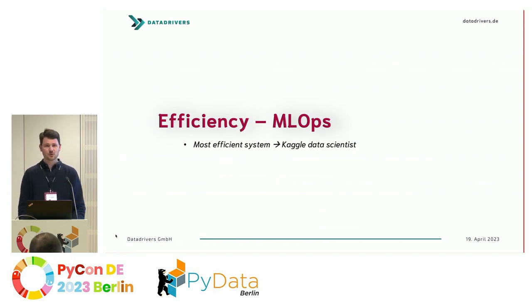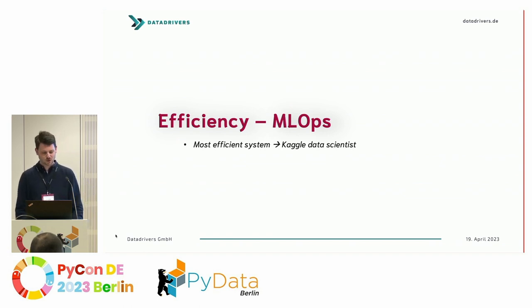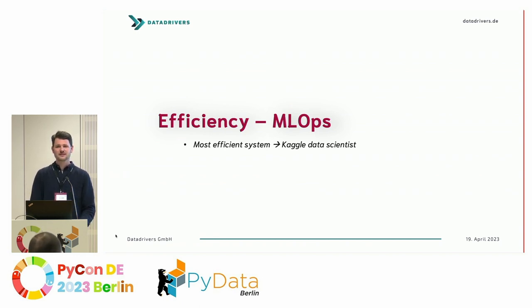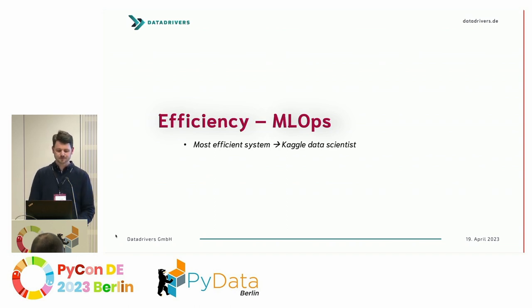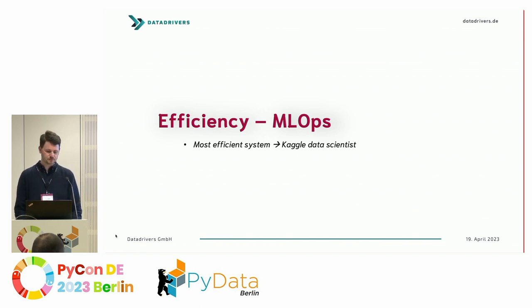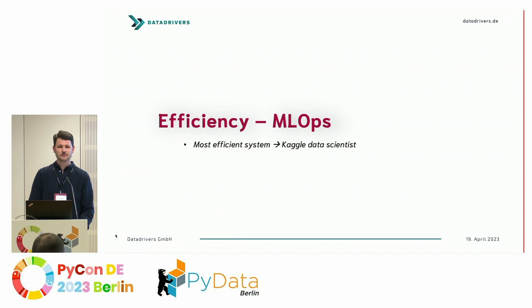To put this bluntly: one very efficient system is the Kaggle data scientist. A data scientist working on a Kaggle problem has a very well-defined business problem, well-defined data sources — you can just download data as a CSV file — and can work on a local machine and iterate very quickly in a Jupyter notebook or IDE. You can make rapid progress, and the benchmarks in Kaggle competitions show how high and competitive results can get.